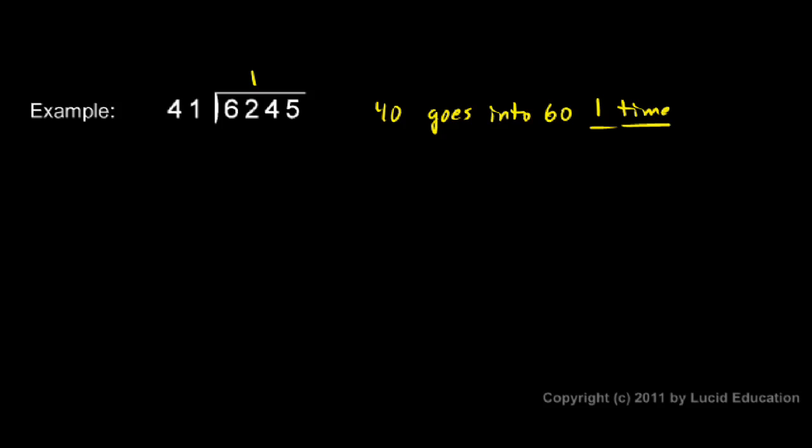So I put a 1 up there. And you don't have to write this out on your page when you're solving a problem. I'm just spelling it out to show you my thought process. 40 goes into 60 one time. So 1 times 41, that's pretty easy. Write a 41 there and I subtract. 2 minus 1 is 1 and 6 minus 4 is 2. So I have 21. I bring this 4 down. So I have 214.